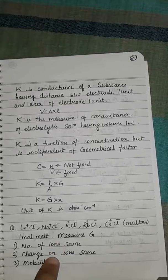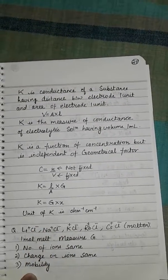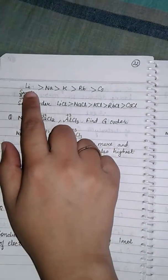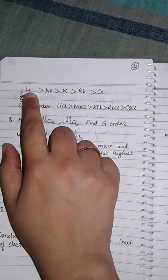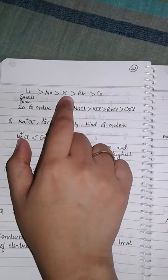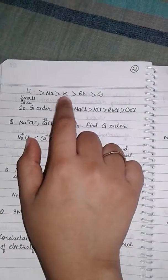Since the number of ions and charge on ions are the same for these, we will consider mobility. Since lithium ion is small, then sodium is bigger than it, and potassium is bigger than sodium, and rubidium is bigger than potassium, and cesium is the biggest in size.